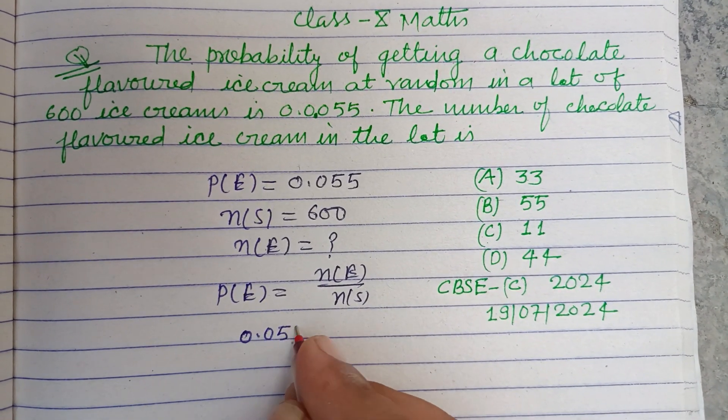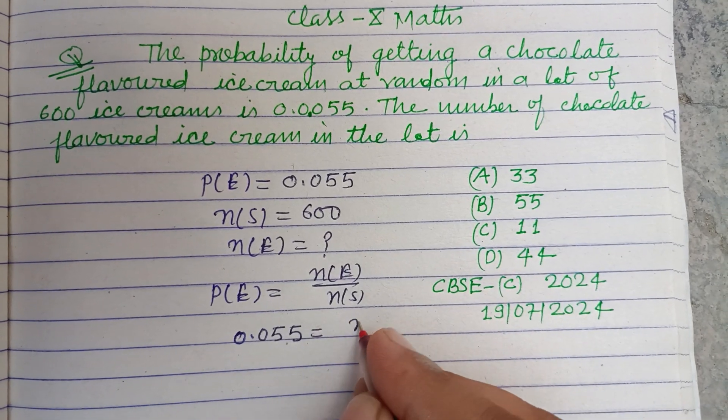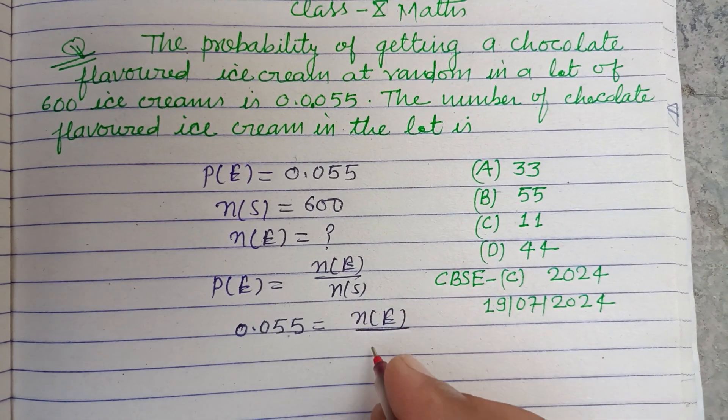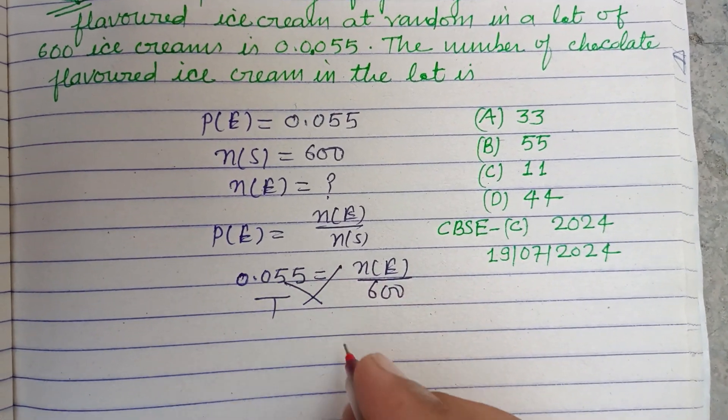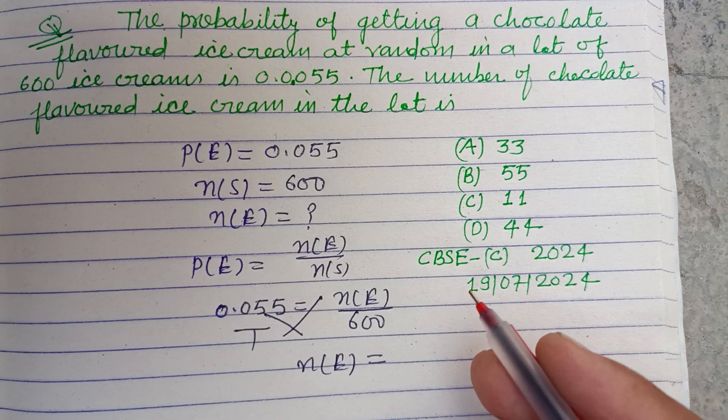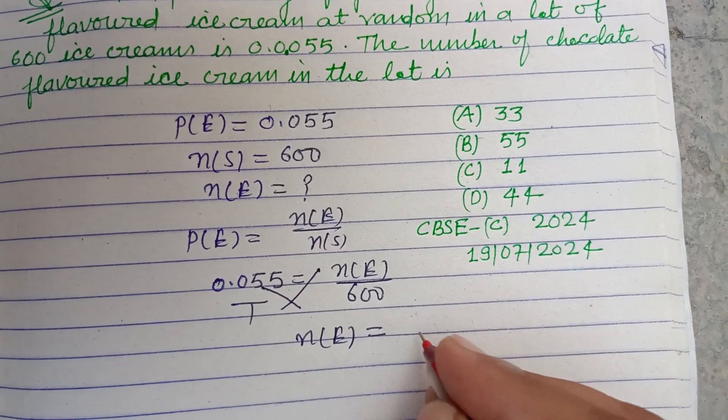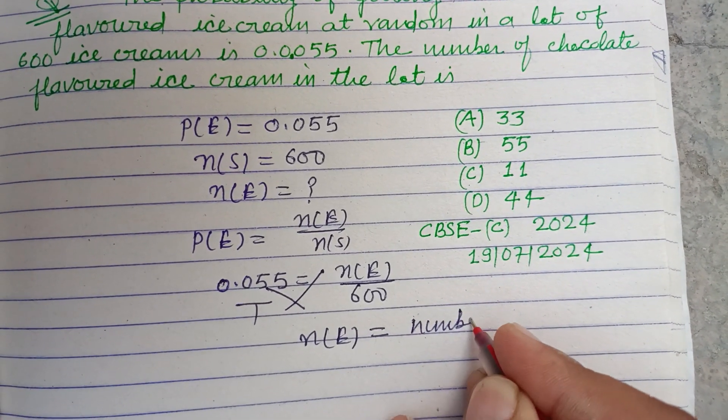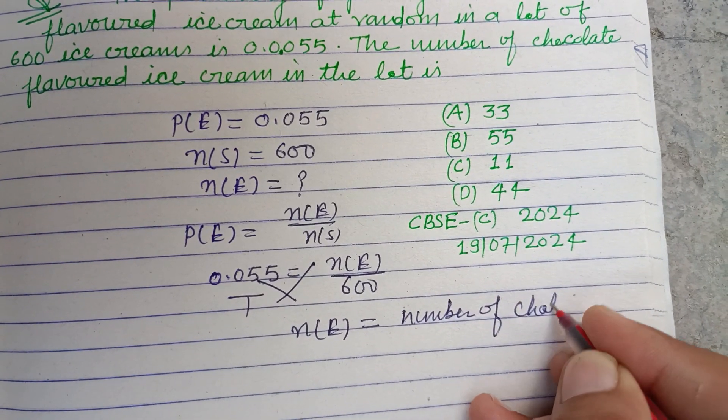So on cross multiplication, we get n(E), which is the number of chocolate flavored ice cream.